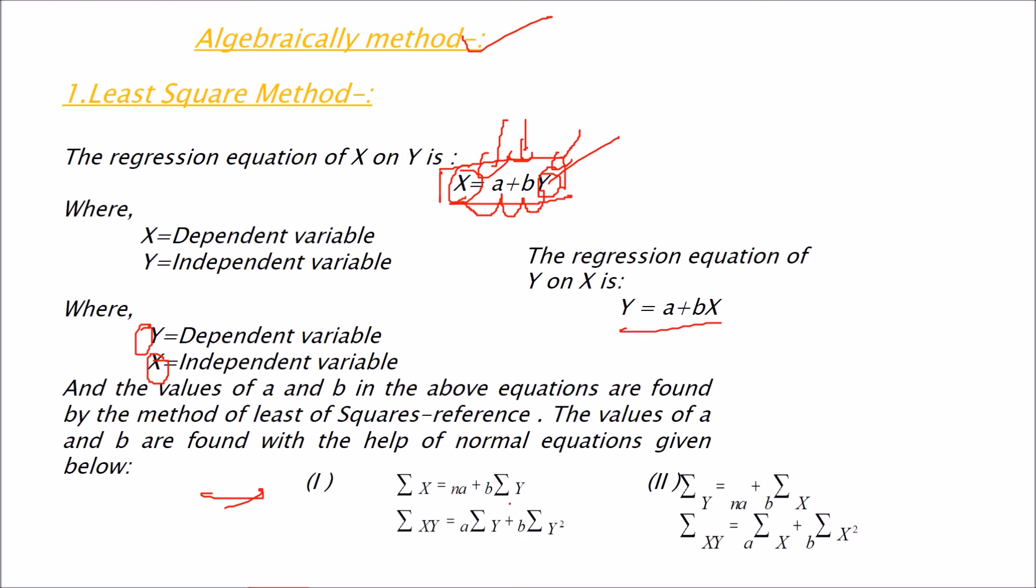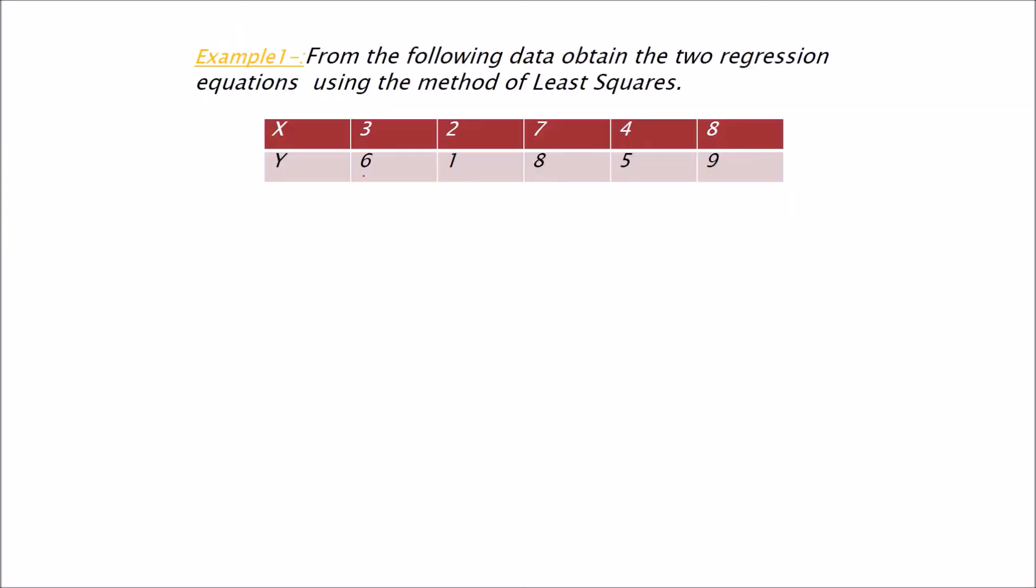These are the expressions which we are going to use in the least square method. Sigma X equals NA plus B sigma Y. Sigma XY equals A sigma X plus B sigma Y square. And sigma XY equals A sigma X plus B sigma X square. Please understand that if you want to find out this A and B value, you need two equations, minimum two equations to solve it. So let us start with an example and we'll use the least square here.